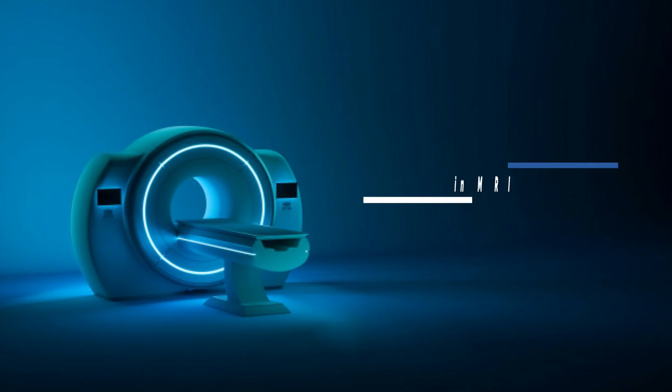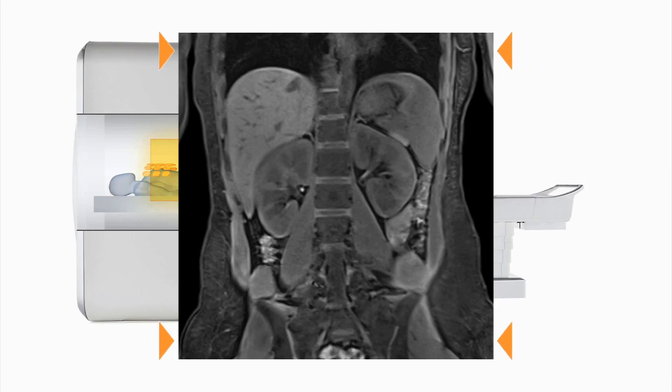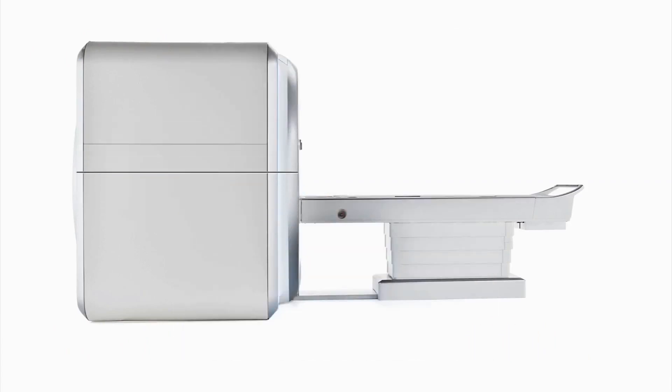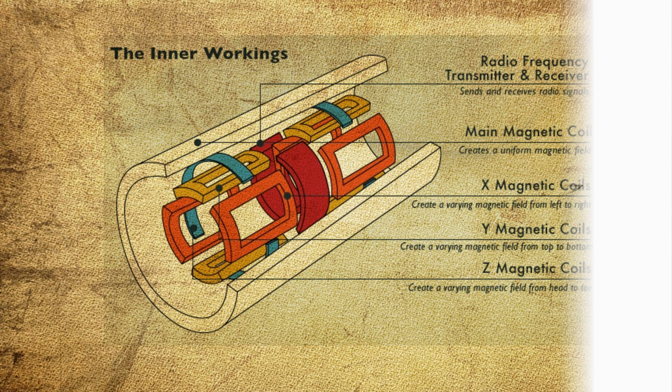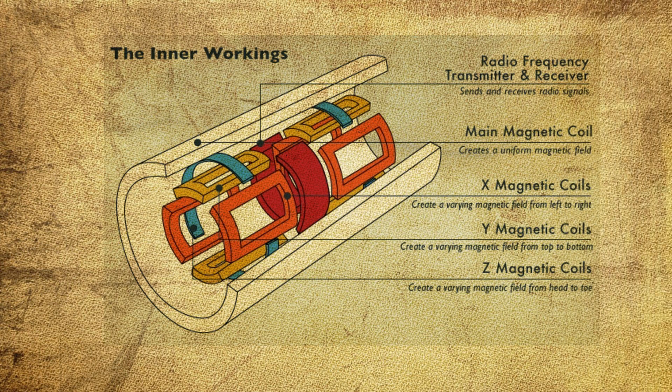The first component is magnets in the MRI machine. The magnet is the largest and most expensive component of the scanner, and the remainder of the scanner is built around it. The strength of the magnet is measured in Teslas, or T.